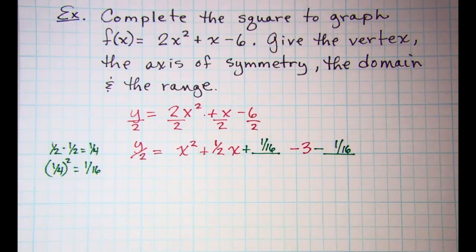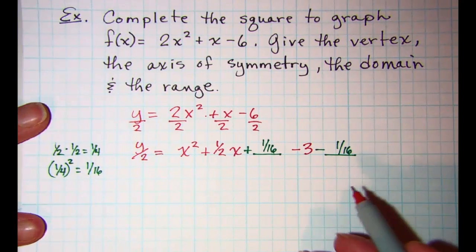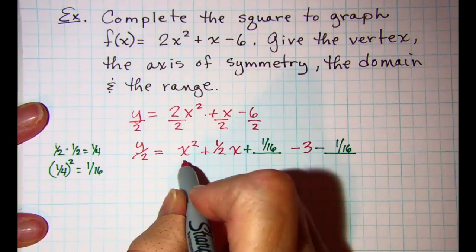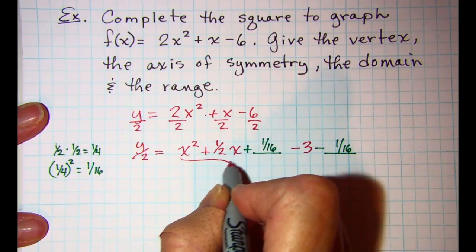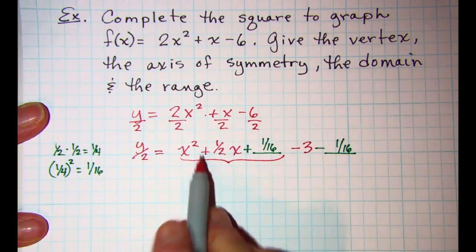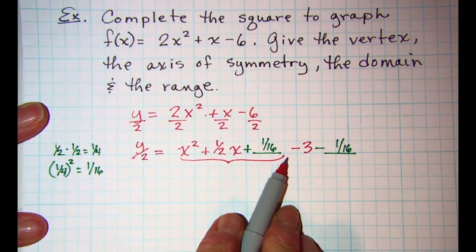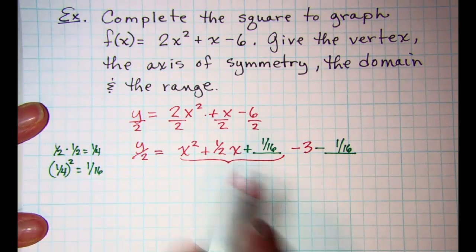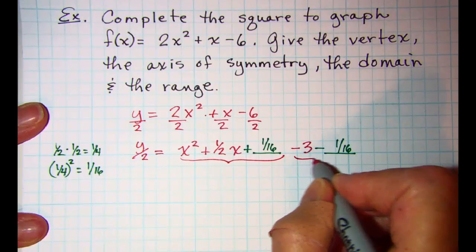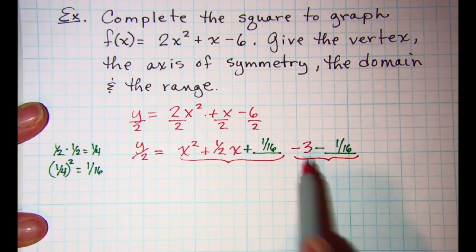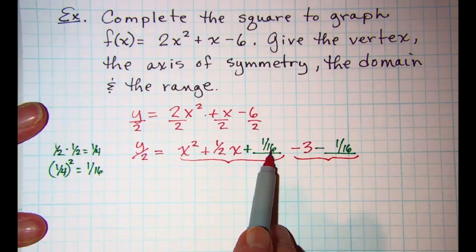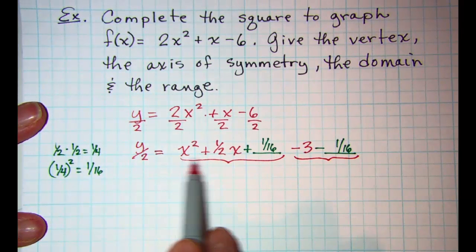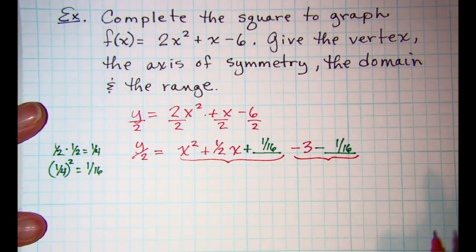Now I know that that looks like, well why do that? They're just going to cancel each other off. But in our next step we're going to take this trinomial right here and factor it and then we're going to combine these two terms. So we needed this 1 sixteenth to make this trinomial a perfect square trinomial.